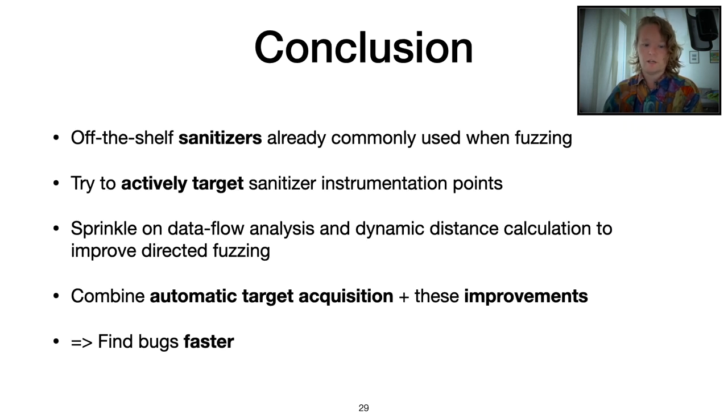In conclusion, we have seen that off-the-shelf sanitizers are already commonly used when fuzzing, so it makes sense to actively try to target these things. Add some dynamic data flow analysis and a dynamic CFG component to actually get a better distance calculation on top of it, and you're able to find bugs at a significantly faster rate.